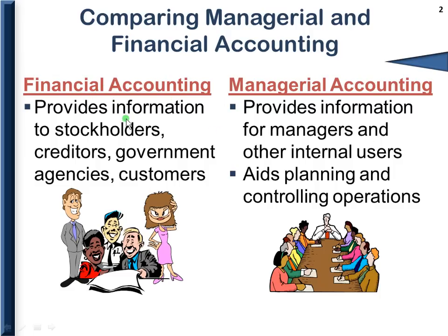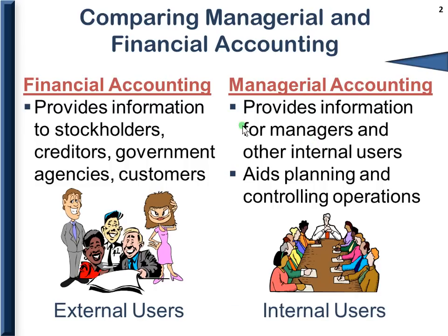Because you have a pretty good understanding of financial accounting and how the financial statements are generated, we're now going to look at that information and break it down into smaller quantities — more detail. Managers will use this to plan and control operations. In fact, planning and controlling are the two main components of managerial accounting.